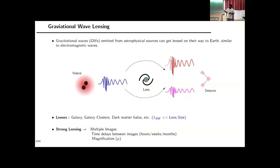Overall, the gravitational waves traveling towards Earth can undergo lensing due to galaxies, galaxy clusters, and dark matter, resulting in multiple images, time delays, and some kind of magnification or demagnification.